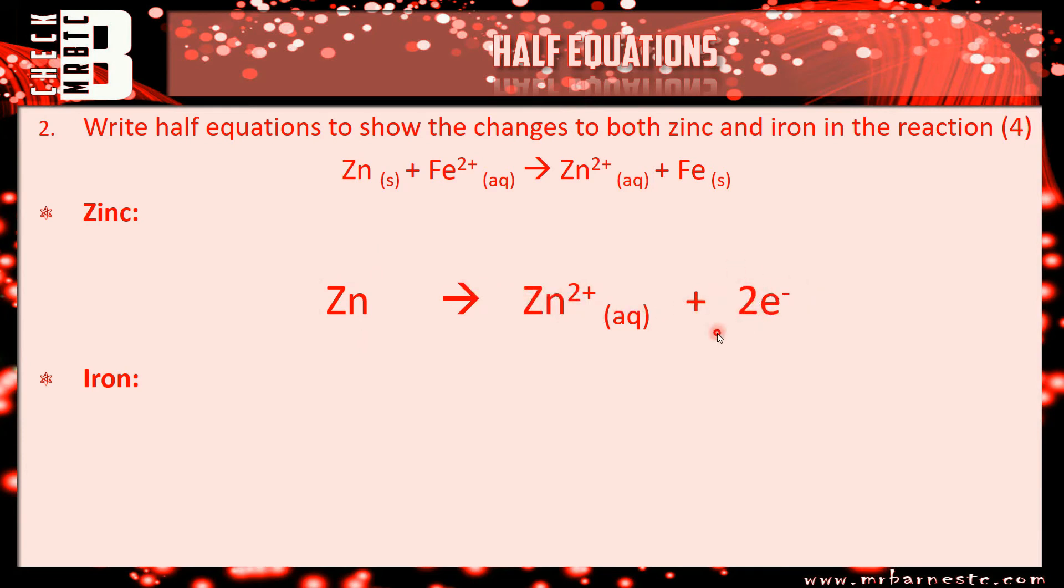We go on to iron. I'm starting off with Fe2+ and I'm ending up with my Fe solid. How do I do that? How do I get from a cation back to the metal? I give it electrons. So I'm giving two electrons back, and again one mark for Fe2+ + e- → Fe and the second mark for your balancing.